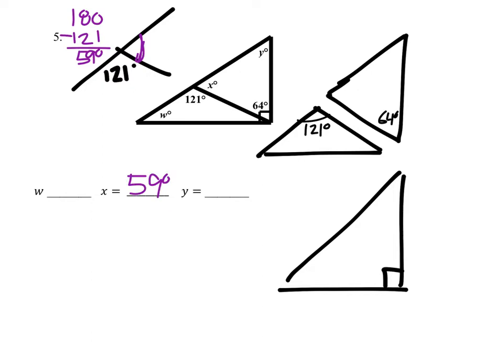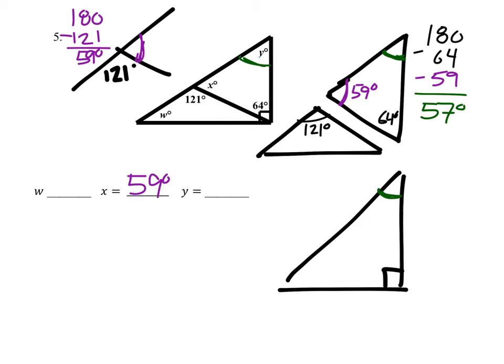That is going to help us, because now we can see that this angle right here is 59 degrees, which is going to help us solve for the Y angle by taking 180 and subtracting the 64 and also subtracting the 59. That gives us this angle Y: 57 degrees. And that is also this angle in the big triangle — 57 degrees, which is Y.